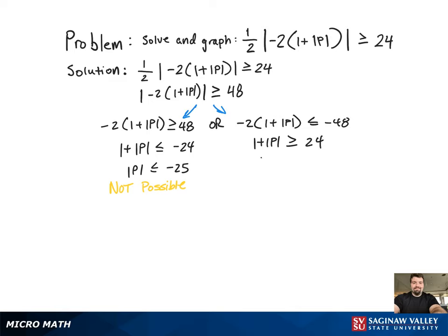So now we move over to the right-hand side, seeing if we have solutions there. Solving for the absolute value of P, we get absolute value of P greater than or equal to 23, and that will have solutions. Since it's greater than or equal to, we're going to separate it with an or statement.